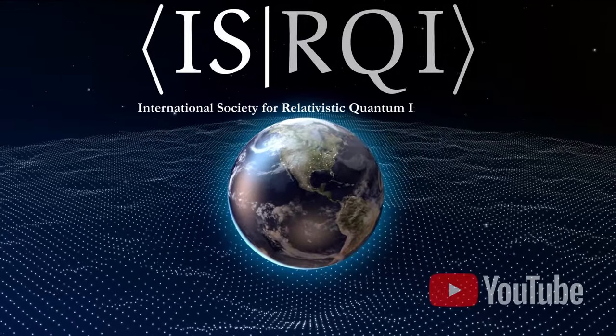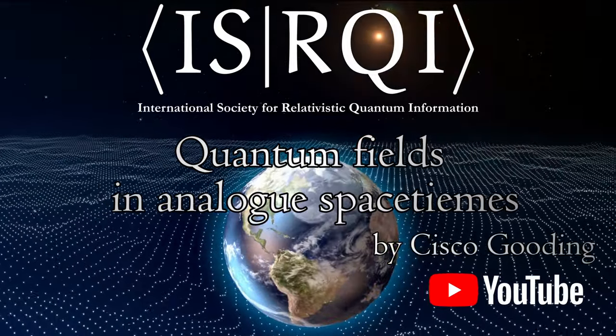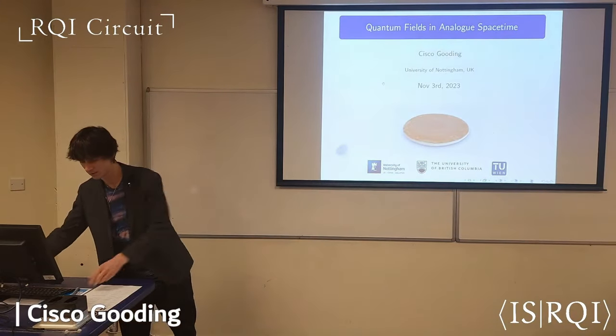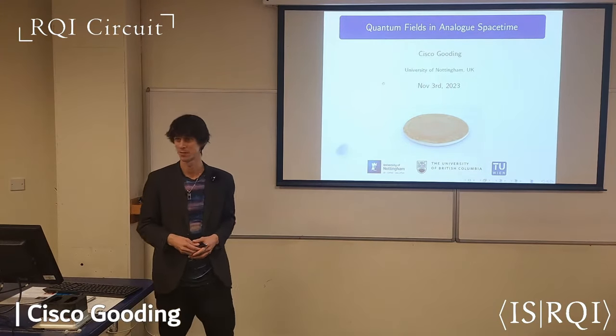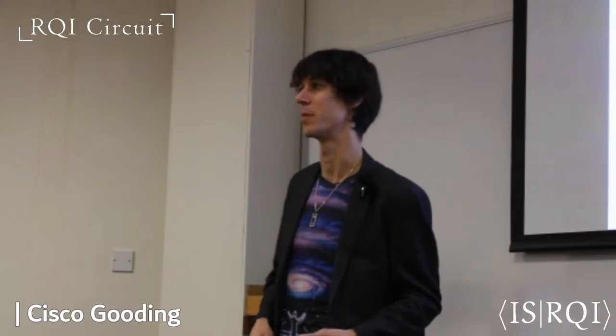Thank you Cameron and everyone else for being here. This talk is going to be about the prototype situation where we started exploring these analogies in a very concrete way to pull out signals — this is the Unruh effect experiment and what we can learn from that about other types of analog spacetime effects that can be implemented in the lab.